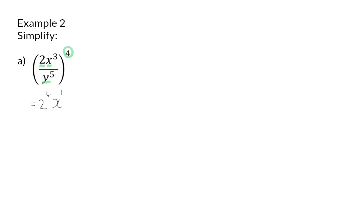And using the law, we will multiply those exponents. And the same will happen in the denominator. We will have y to the power of 5 to the power of 4. And multiplying those exponents will give us 20.